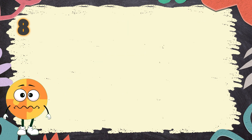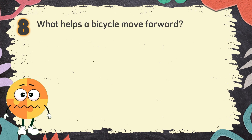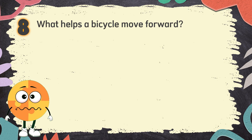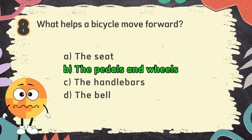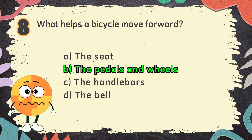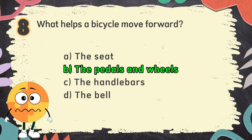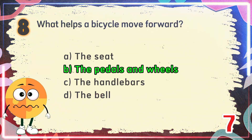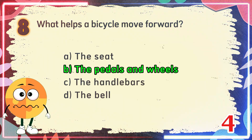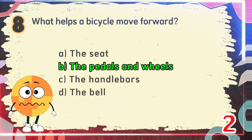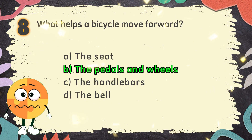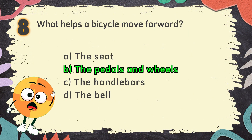Number 8. What helps a bicycle move forward? The choices are: A. The seat. B. The pedals and wheels. C. The handlebars. D. The bell. The correct answer is B. The pedals and wheels.